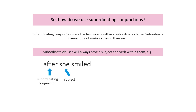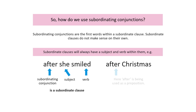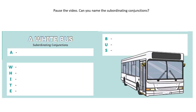For example, 'after' can be a subordinate conjunction — we have the subject 'she' and the verb 'smiled'. That builds a subordinate clause with a subordinate conjunction starting it. But remember, if you see 'after Christmas,' that 'after' is being used as a preposition, not a subordinate conjunction — it's not a subordinate clause. Pause the video now and see if you can name the subordinate conjunctions.